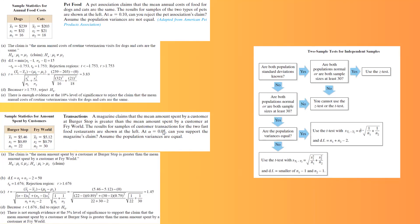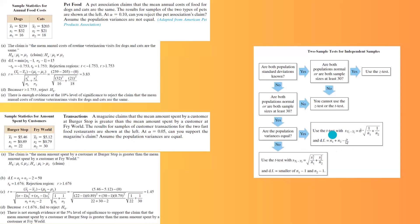The claim is that mu1 is greater than mu2, making it the alternative hypothesis. The null hypothesis is mu1 is less than or equal to mu2. This is a right-tail test. Since population variances are equal, degrees of freedom equals n1 plus n2 minus 2, which is 22 plus 30 minus 2, equaling 50.